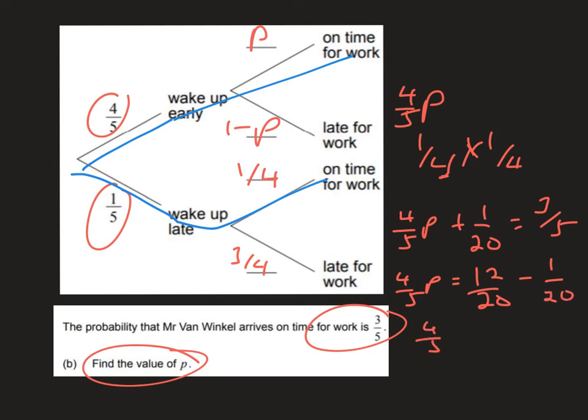this side. So we're going to have four-fifths P is the same as 11 over 20, and therefore we can solve that to find that P is 55 over 80, which is the same as 11 over 16.